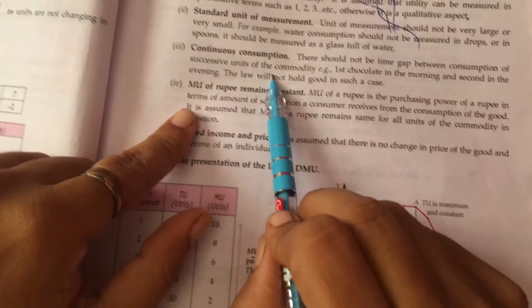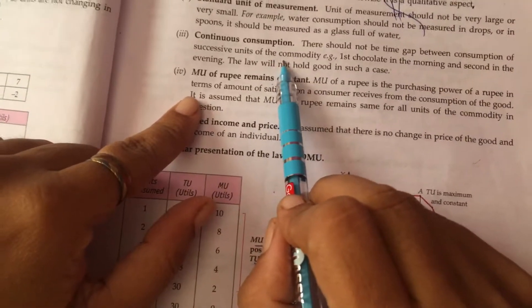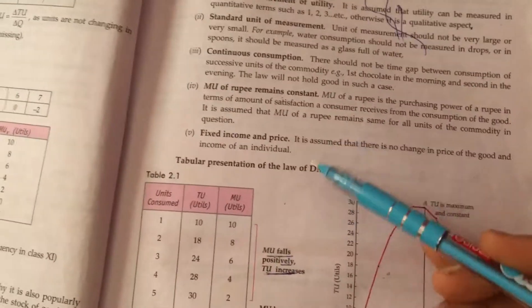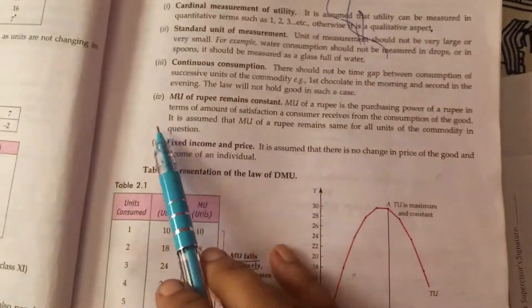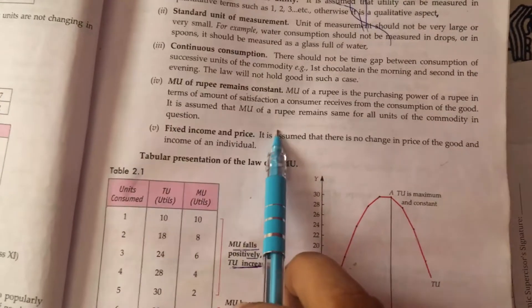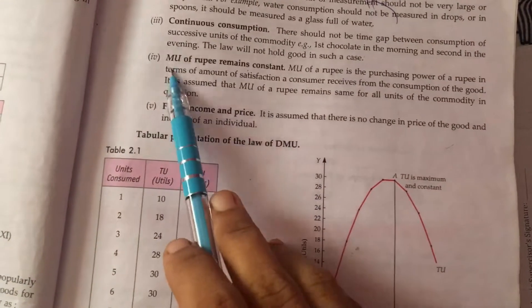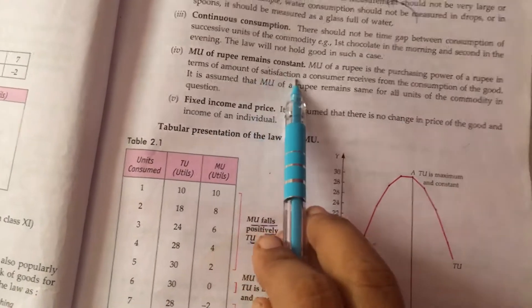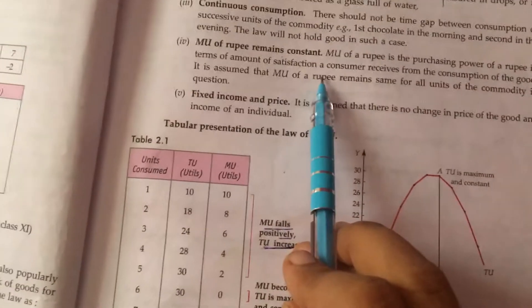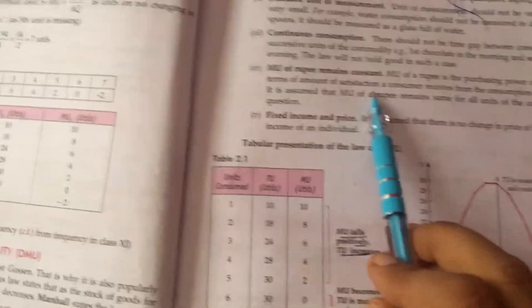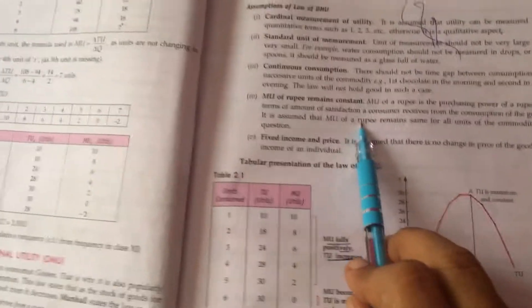And next, this law says that it is continuous consumption. Whatever you are consuming, it has to be continuous. You are continuously using the goods. Then comes fixed income and prices. Whatever the income is there, that has to be fixed. And marginal utility of rupees remains constant. Because the currency of our country, the rupee value is given in rupees. So we are considering the money or the rupee as a measure of the price.